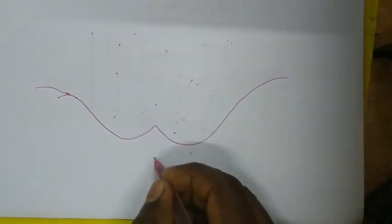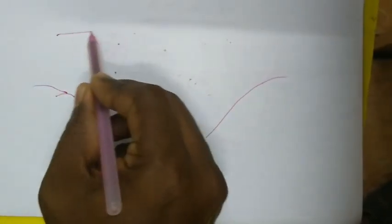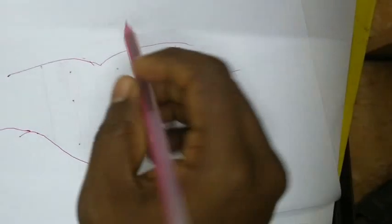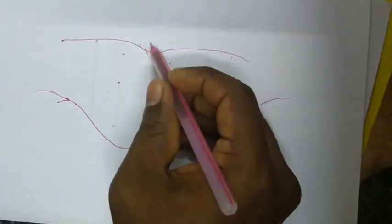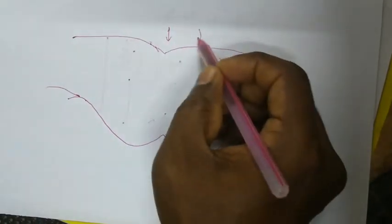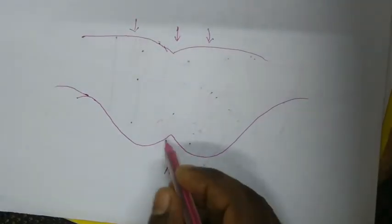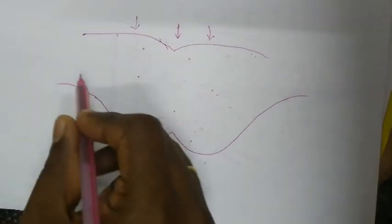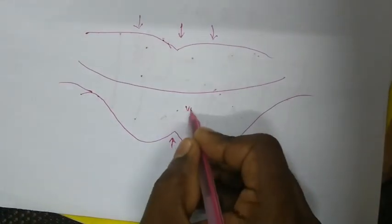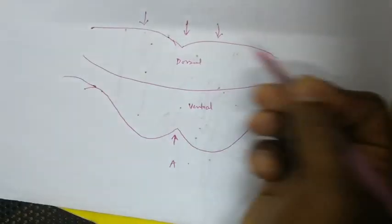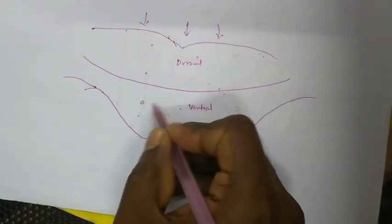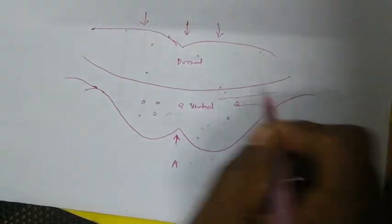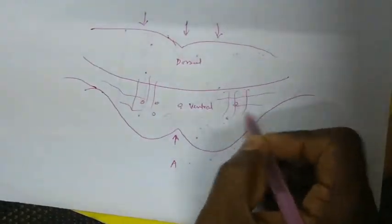Now we will draw the section of pons and discuss the common features. This is the anterior aspect and the posterior aspect, which will be forming the floor of the fourth ventricle. This is the anterior bulged portion and this is the basilar groove for the basilar artery. This pons section can be divided into the ventral aspect and the dorsal aspect. Whatever the pontine nucleus and the horizontal fibers and the vertical fibers we discussed so far — everything is present in the ventral aspect.